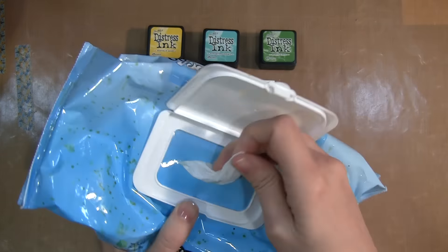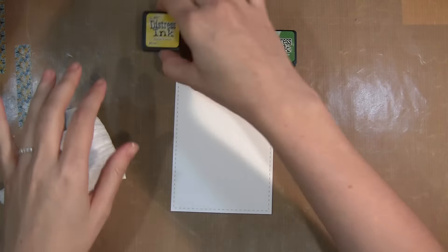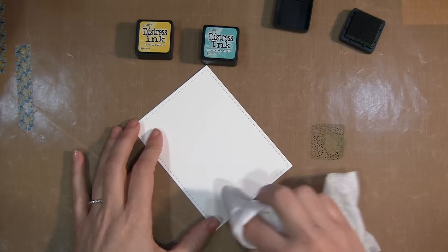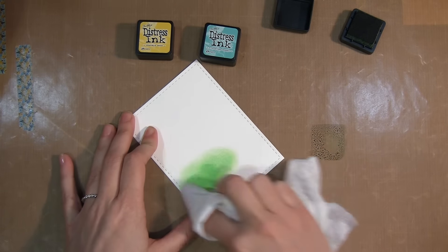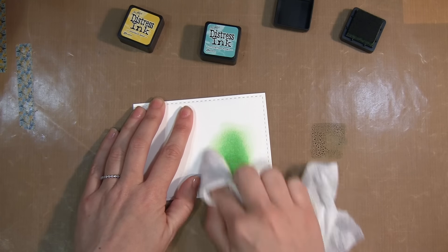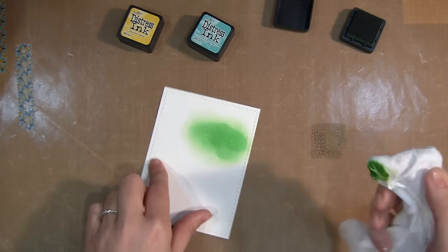I'm grabbing one of my baby wipes and putting my distress inks down on a craft mat. If you don't have a craft mat, you can use an acrylic block. Then I'm using the baby wipe and my finger to grab some of the ink and blend it into watercolor paper.